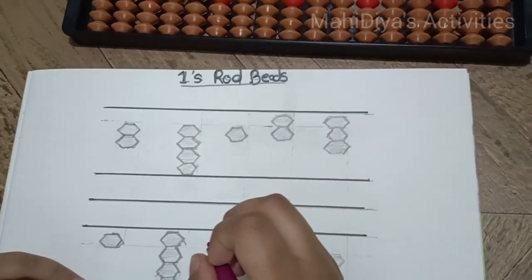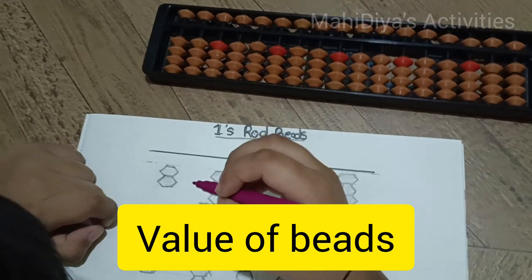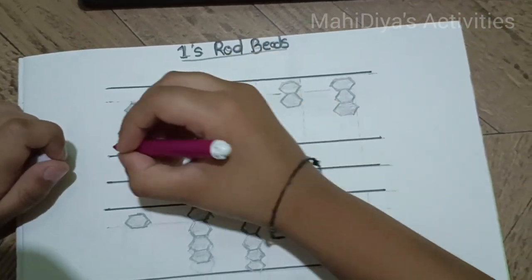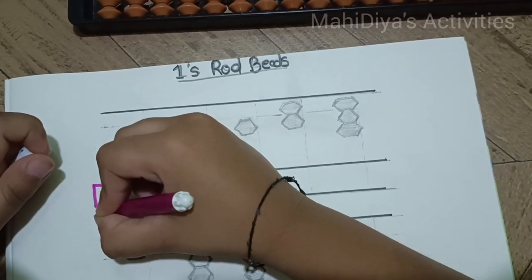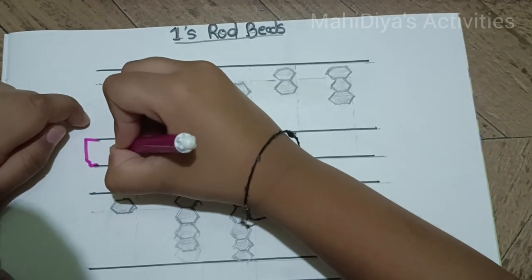So now we should write the answers, ok? Here we should write the first answer: 1, 2, so it is 2. Here we write 2.